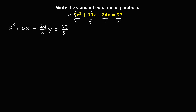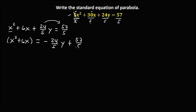To rewrite this in standard form — since the variable with exponent 2 is x, therefore all x terms go on the left side and the rest are transposed to the right side. So all x on the left side: x squared plus 6x, then equals. Transposing to the right side, this becomes negative 24 over 5y, then plus 57 over 5.